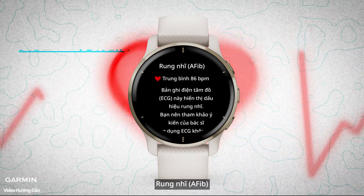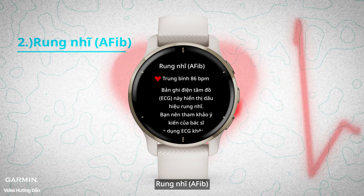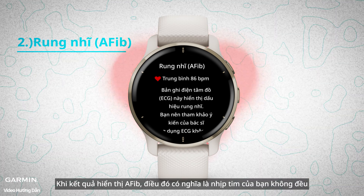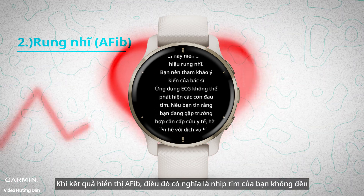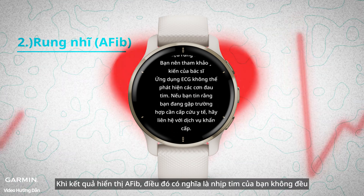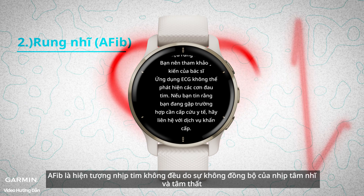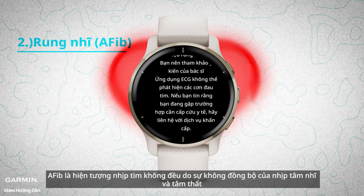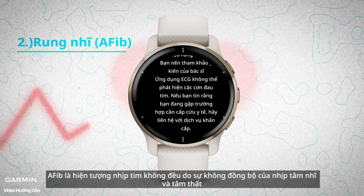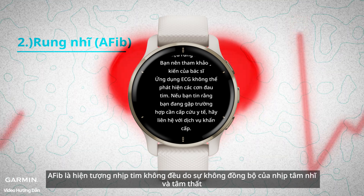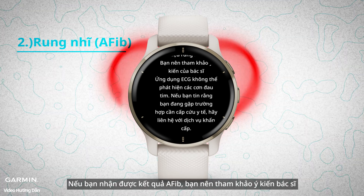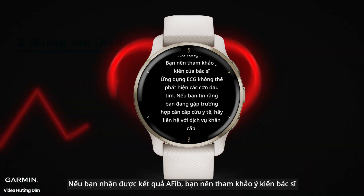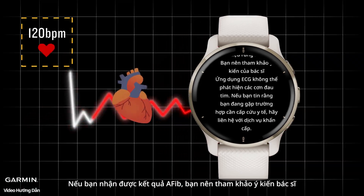Atrial fibrillation. When the result shows AFib, it means that your heartbeat is irregular. AFib is an irregular heartbeat phenomenon caused by the asynchrony of atrial and ventricular beats. If you get unexpected AFib results, you should consult your doctor.